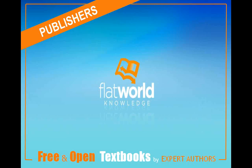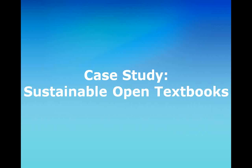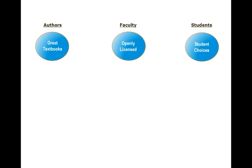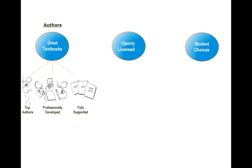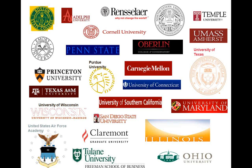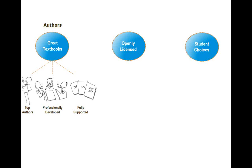In order to help you understand how we utilize the open license, we'll explain how we publish books under it — benefiting professors, authors, and students. What we do just like every other traditional publisher: we take top authors like David, professionally develop their books through reviewers, fully support them with resources to help you teach the course — like a test item file, instructor's manual, desk copy, et cetera — and we produce a textbook. You can see that the quality of our textbooks is high just by looking at a sample of the over schools that are using our books today.